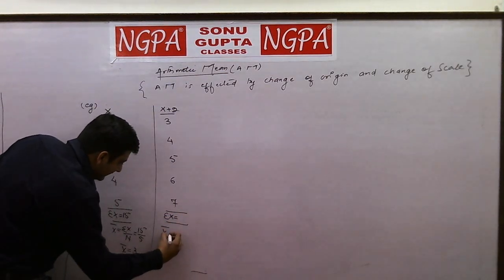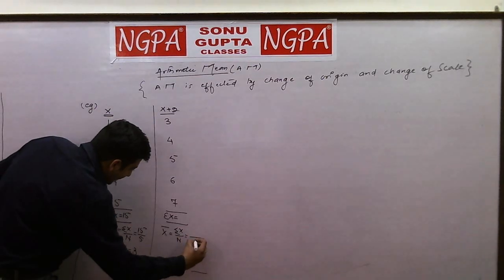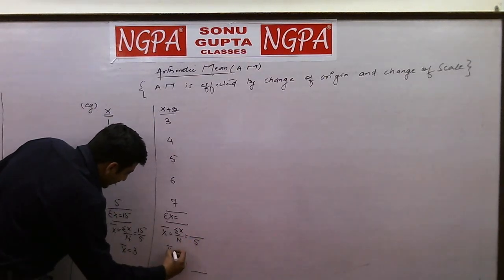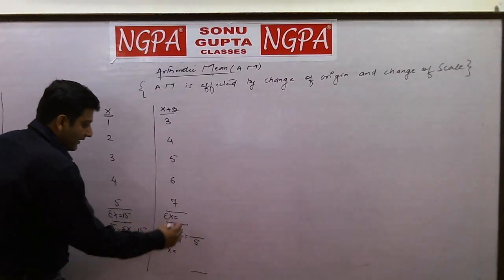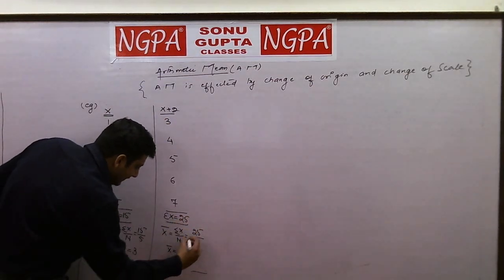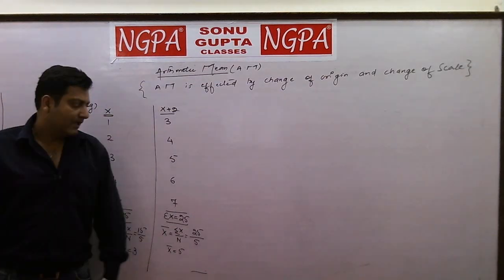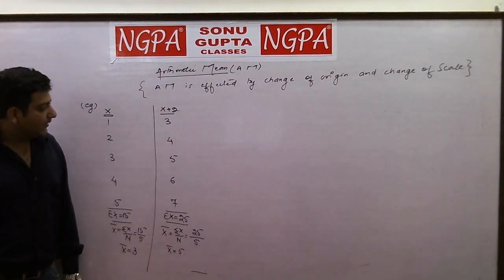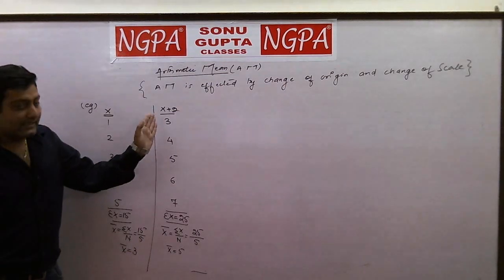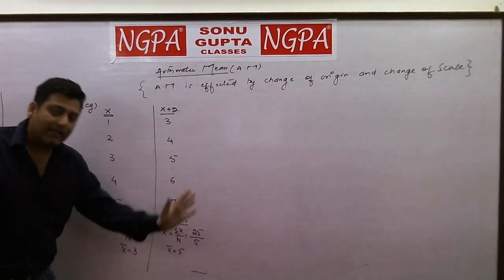Again, let us calculate mean. The formula is same: sigma x divided by n. Obviously, number of items remains the same. The total is 25, 25 divided by 5 is 5. Simple. So we added 2 to every value of x and calculated the arithmetic mean.